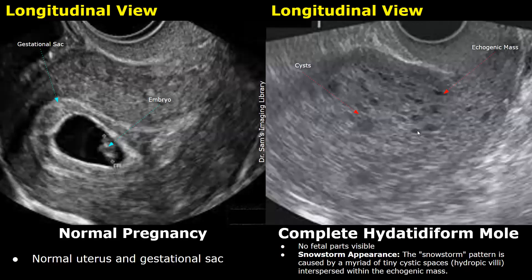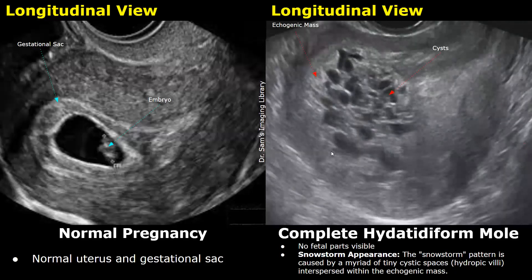This type of appearance is termed a snowstorm appearance. The echogenic mass is filled with cystic spaces. Here is another image showing a complete hydatidiform mole — we see a large mass filled with multiple cystic spaces, and no fetal or embryonic parts are seen.